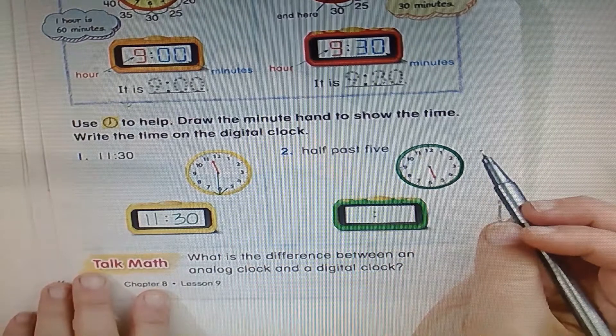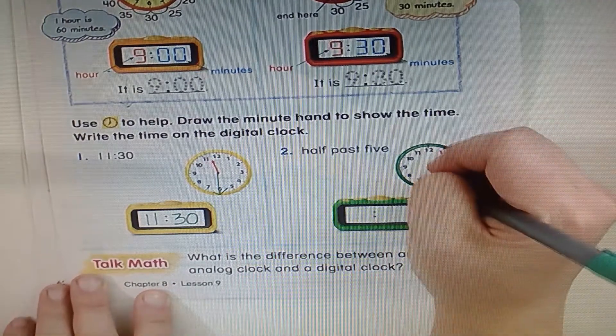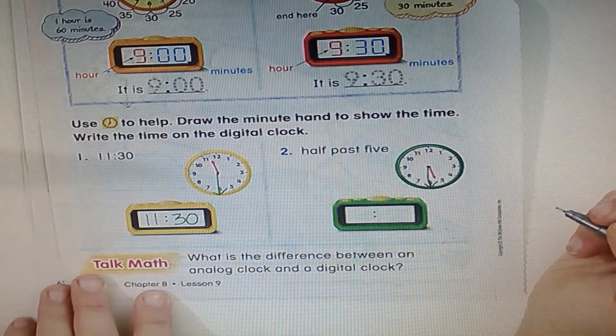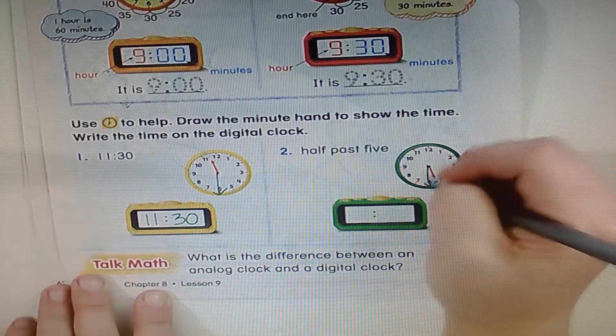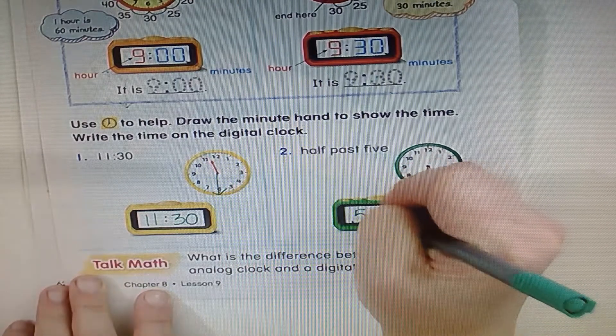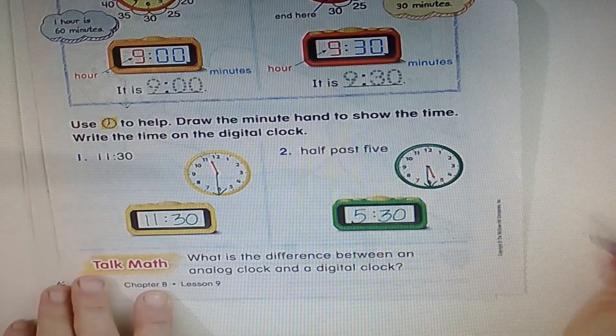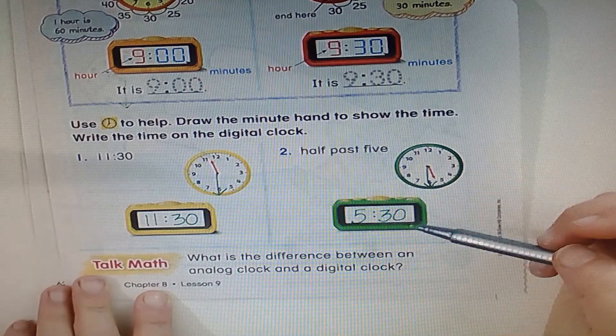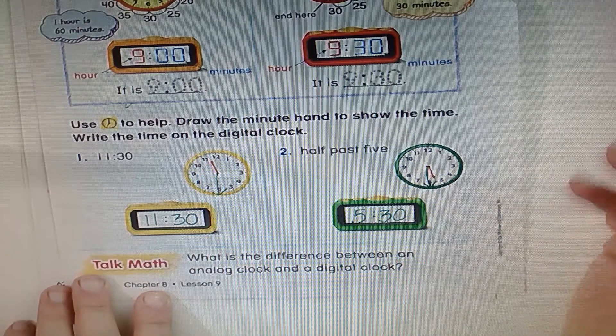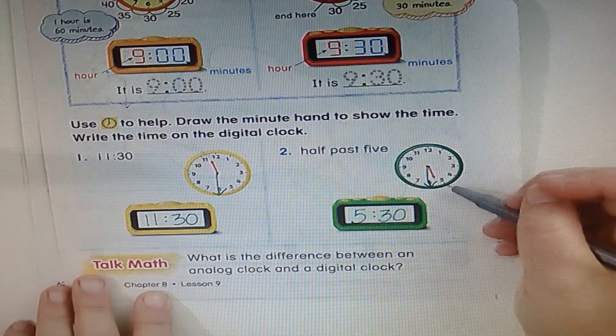Half past five. Half past is 30 minutes. Sorry that mine got wiggly. And which means we write 5:30. Half past is just a fancy way of saying a half hour or 30 minutes. It's all the same. 5:30.